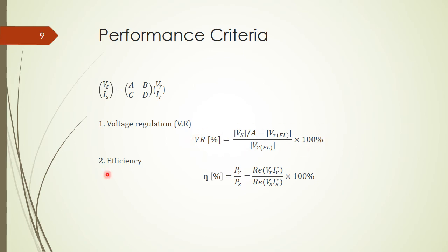The efficiency is given by Pr over Ps and is obtained by multiplying the voltage and the current together. If we multiply the current conjugate, then we need to take the real part and then compare the quantity at the receiving end and sending end.